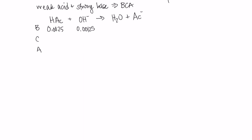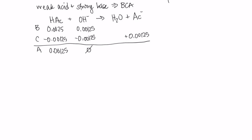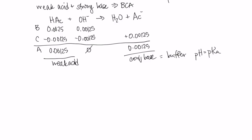We're going to use up our base completely — it's the limiting reactant — and that determines how much reacts. We'll gain a little of our acetate ion on the right, and we'll have none of the base left. It turns out we'll have equal quantities of our weak acid and our conjugate base. This is a buffer, so we can use the Henderson-Hasselbalch equation. When we have equal quantities of acid and conjugate base, pH equals the pKa. So our pH will just be the negative log of Ka, which is 4.75.